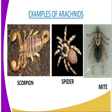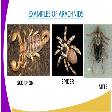The first characteristic is that the body has two parts — that is the cephalothorax and the abdomen. What I mean by cephalothorax is that the head and the thorax are joined together, so it might be difficult for you to differentiate them. That is why we are referring to it as the cephalothorax.